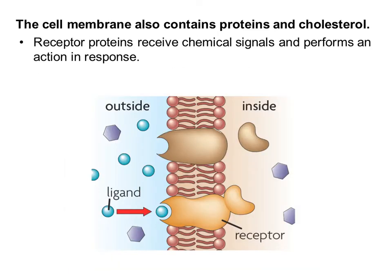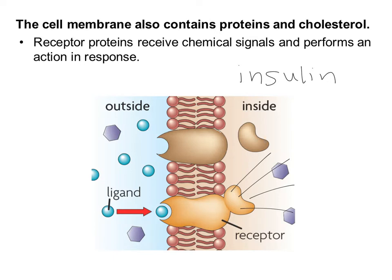Our next category of proteins are called receptor proteins, and these receive chemical signals and perform some kind of action in response. These chemical signals are small molecules referred to as ligands, and you can see that this ligand is going to bind with this receptor, causing some kind of signal to happen in the cell. A good example of this is when hormones such as insulin meet up with receptors in our cells — insulin lowers our blood sugar by signaling the cells to bring sugar from the blood into the cells. In this case, the ligand is the hormone insulin.